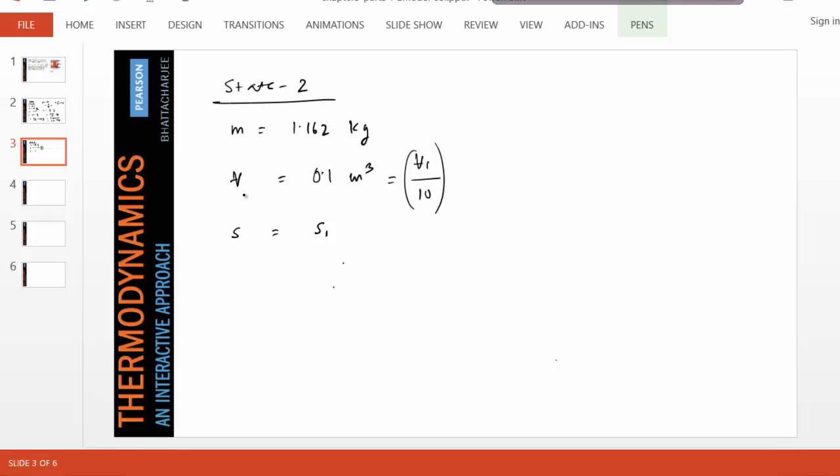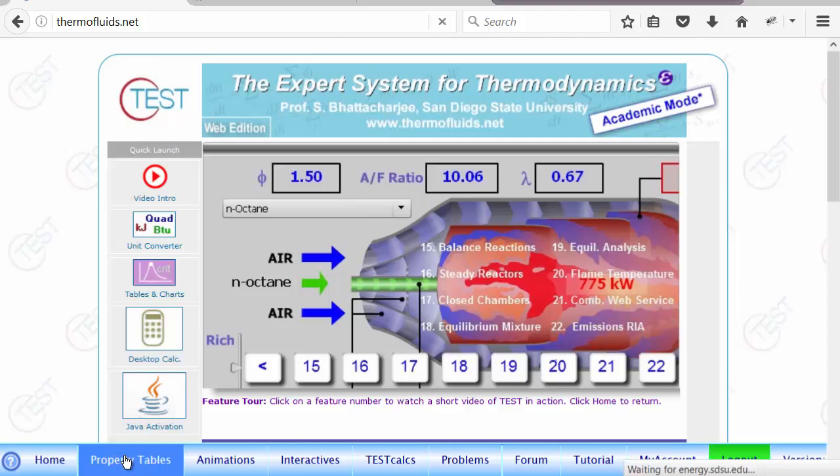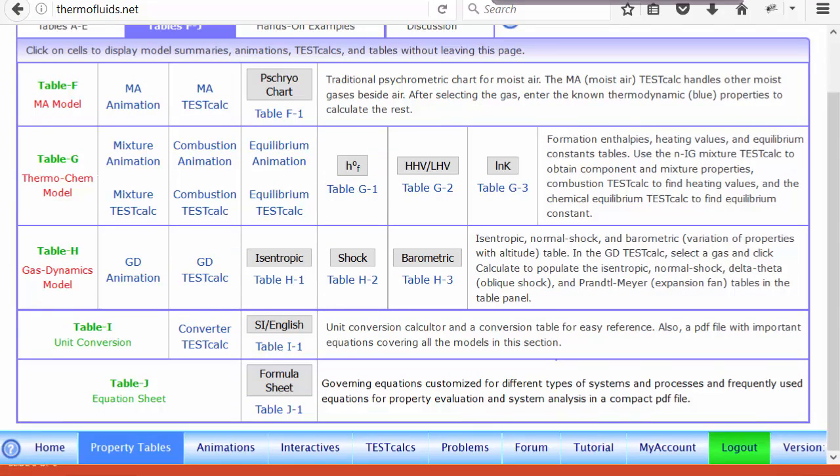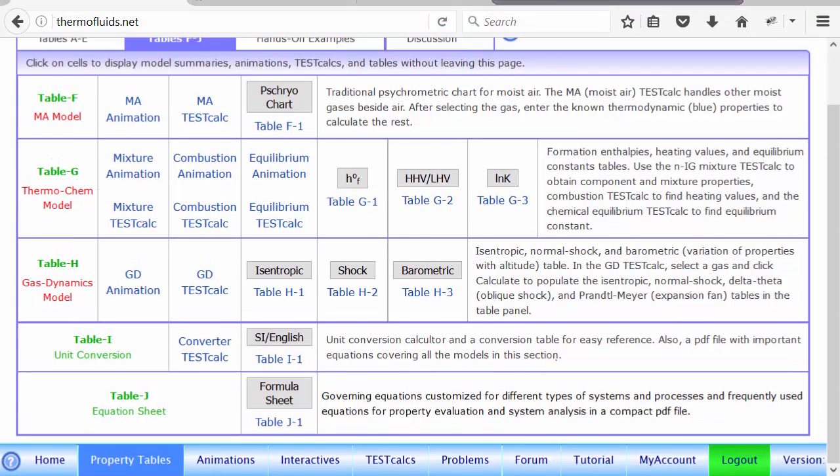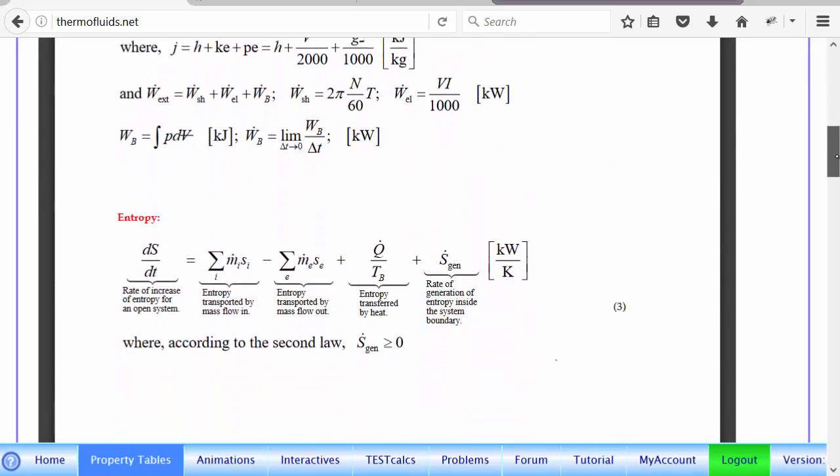Now, for the PG model, if entropy remains constant, if you go to your formula sheet, let me just go to test and tell you what I mean by that. If you go to property tables, and table J has all your formulas that you ever need. So open up, this is table J.